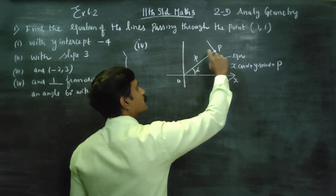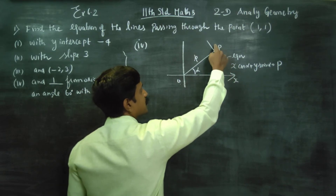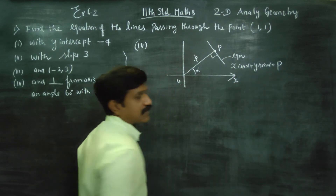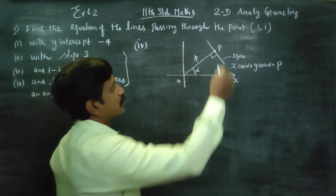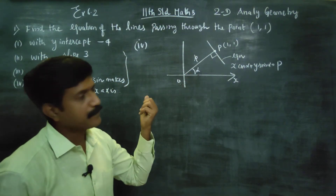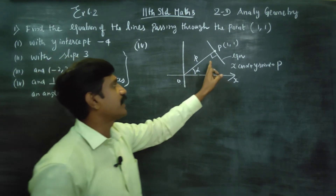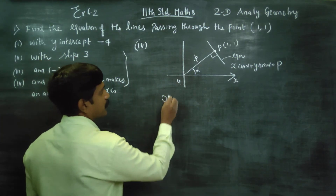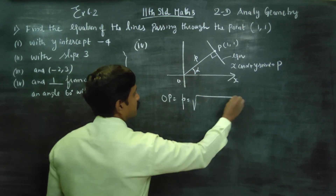One line from the origin meets the required line perpendicularly. The formula for this is x·cos α + y·sin α = p, where p is the distance from the origin to the given point. The given point is (1, 1), so we first find p = OP using the distance formula from origin (0,0) to (1,1).